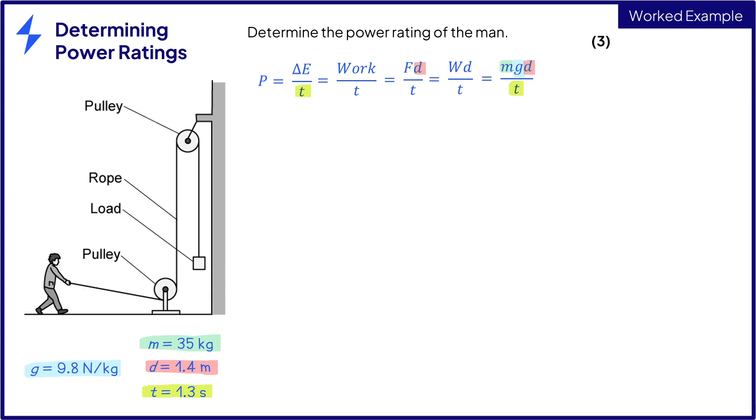So firstly to calculate the weight of the load we write out the equation. We substitute in the known values where mass is 35 kilograms and gravitational field strength is 9.8 newtons per kilogram giving a weight of 343 newtons for one mark.